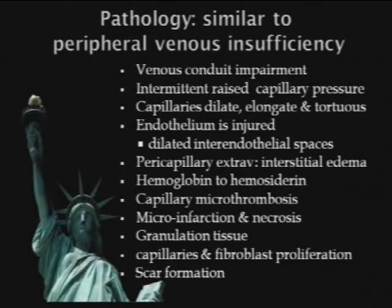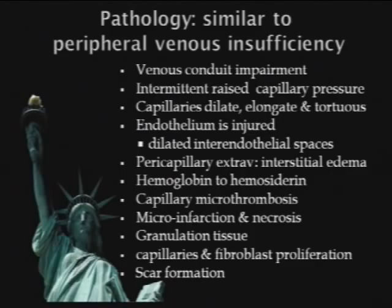The pathology of CCSVI is similar to that of peripheral venous insufficiency. There's conduit outflow impairment raising intermittently capillary pressures, resulting in capillary dilatation, elongation, and tortuosity. The endothelium is injured. There's dilatation of inter-endothelial spaces leading to extravasations and interstitial edema. Hemoglobin is released into the brain, breaks down to hemocytorin and ultimately into iron. There's macrothrombosis at the capillary level, venous infarcts occur in some syndromes, and inflammatory process and scar formation occurs in the brain.